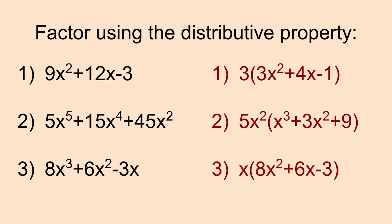So here are our answers for the first three. For number one, the only thing we can factor out is this three. That's the only thing that all three of these terms have in common, so we have to take out a three. When we take out the three, we're left with 3(3x² + 4x - 1).